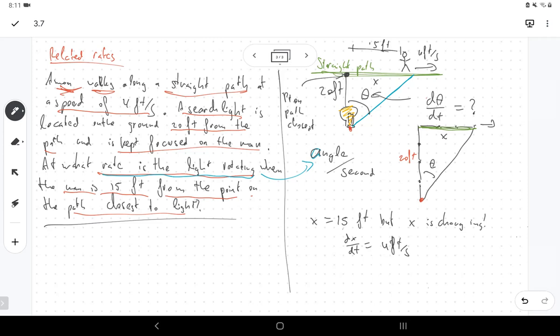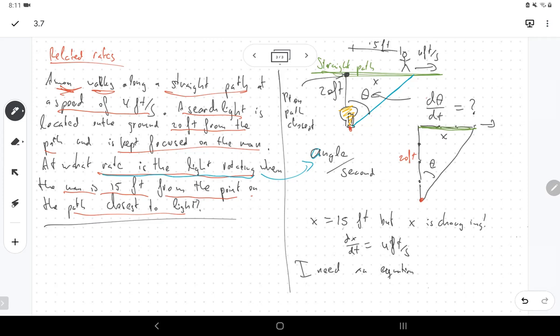And I don't know anything else. On the other hand, I used all the numbers that were given to me, so I'm probably done. There's 20 feet and 4 feet per second. And I wrote down what they want me to do, so I need an equation.